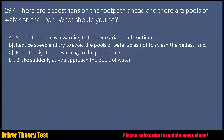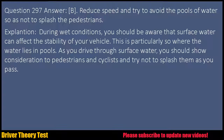Question 297: There are pedestrians on the footpath ahead and there are pools of water on the road. What should you do? a. Sound the horn as a warning to the pedestrians and continue on. b. Reduce speed and try to avoid the pools of water so as not to splash the pedestrians. c. Flash the lights as a warning to the pedestrians. d. Brake suddenly as you approach the pools of water. Question 297 Answer: B. Reduce speed and try to avoid the pools of water so as not to splash the pedestrians.